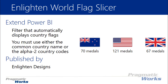You have the ability to easily change a filter into a flag-based filter. You also have the ability to show and display a metric below the flags. If you have some kind of a metric value, you can display those below any of the flags — for example, 70 medals, 121 medals, 67 medals — displayed right below the slicer.